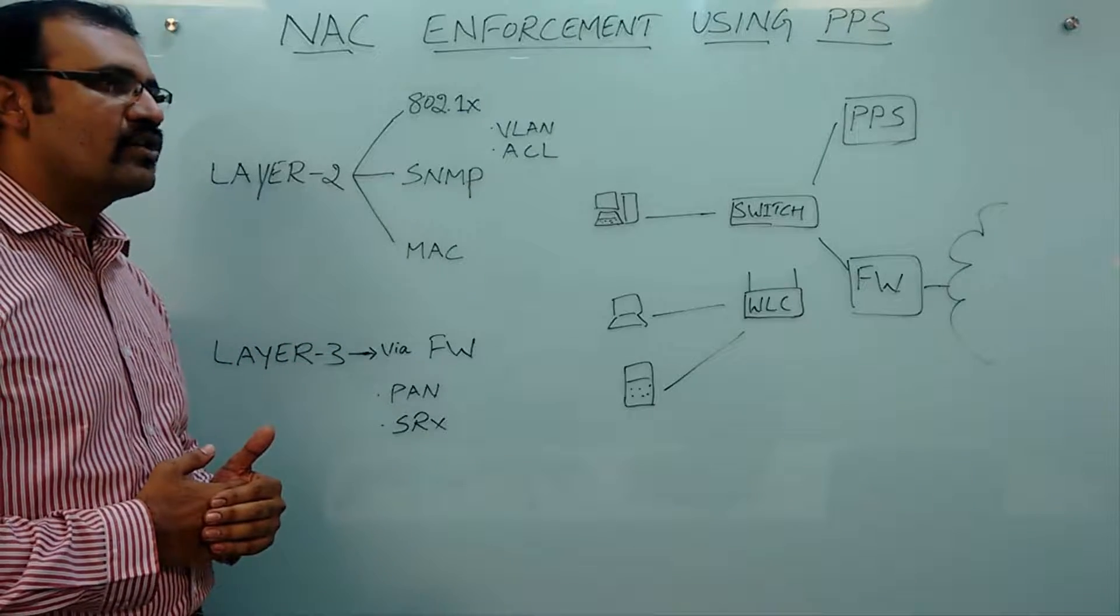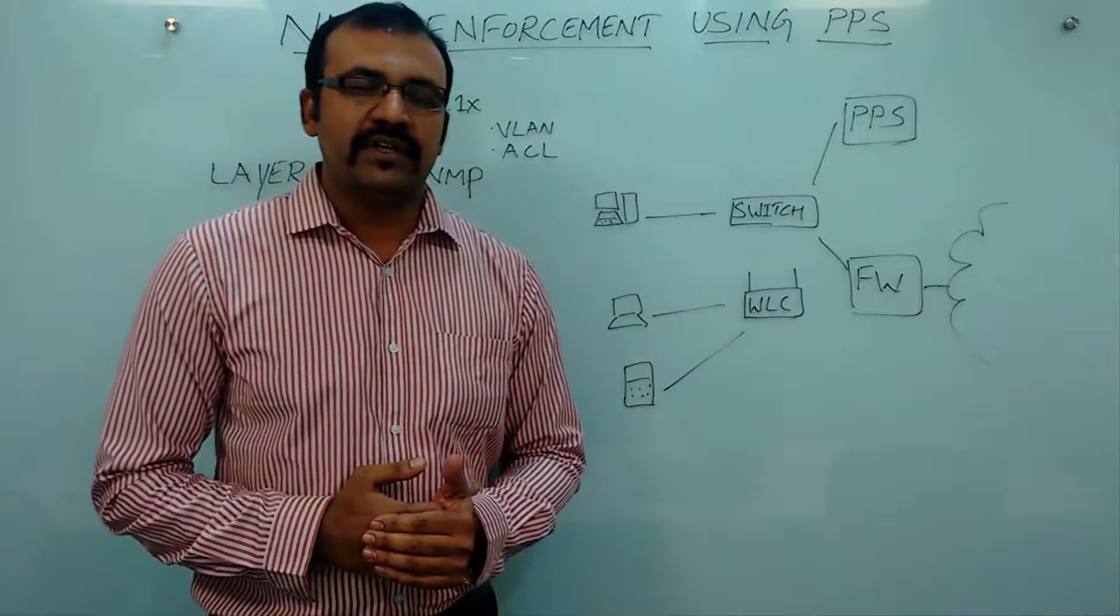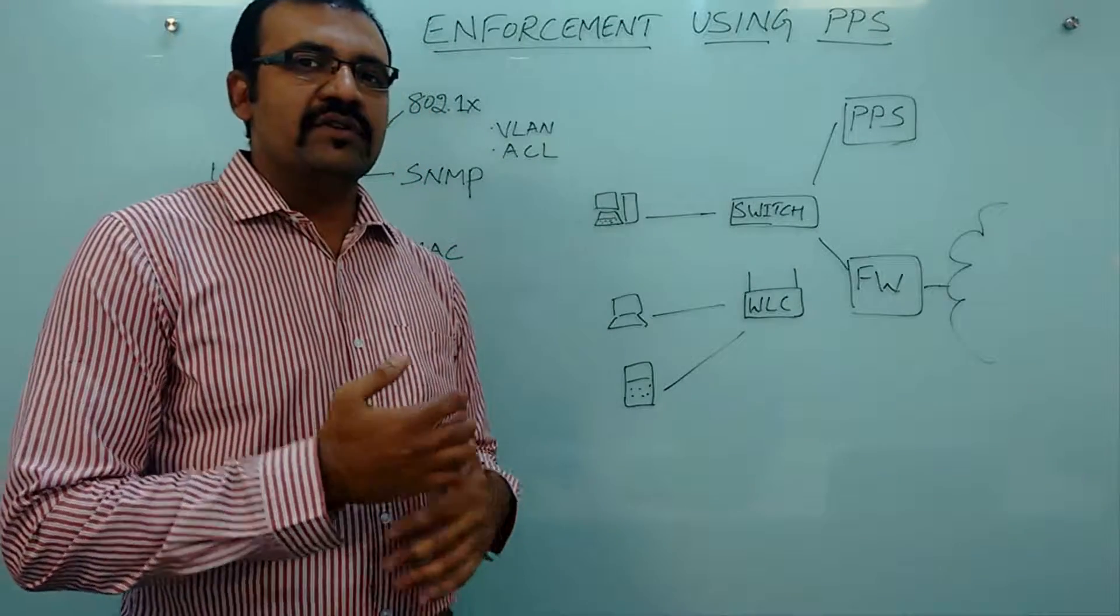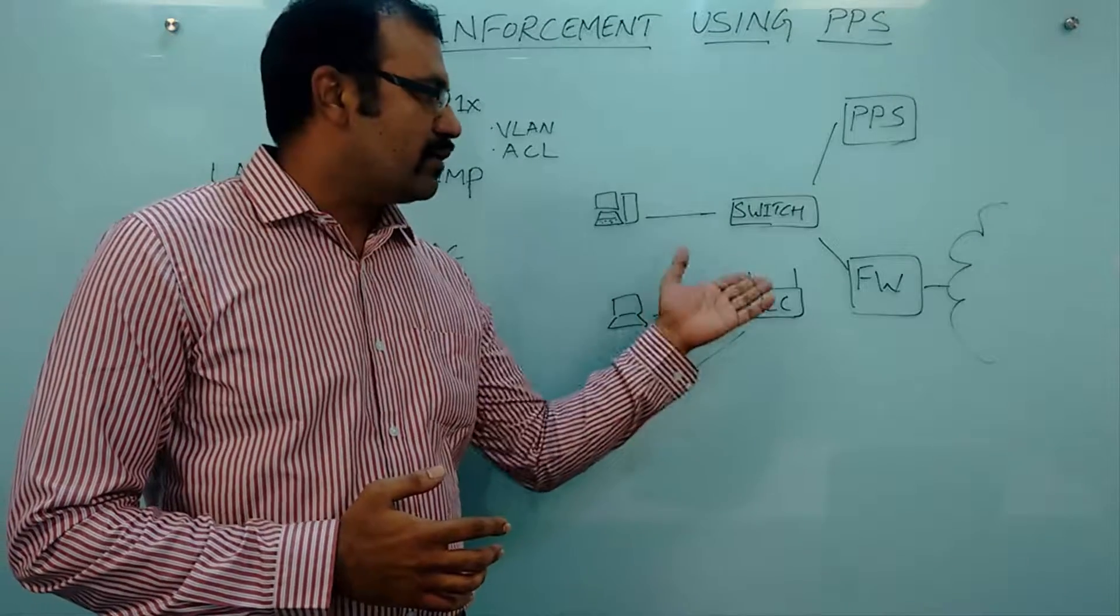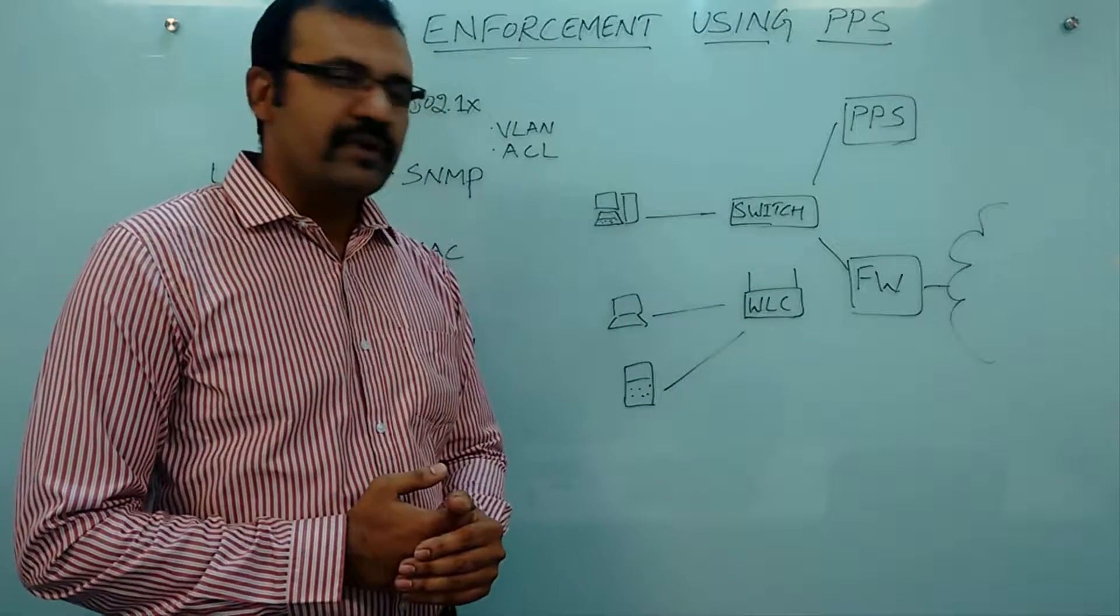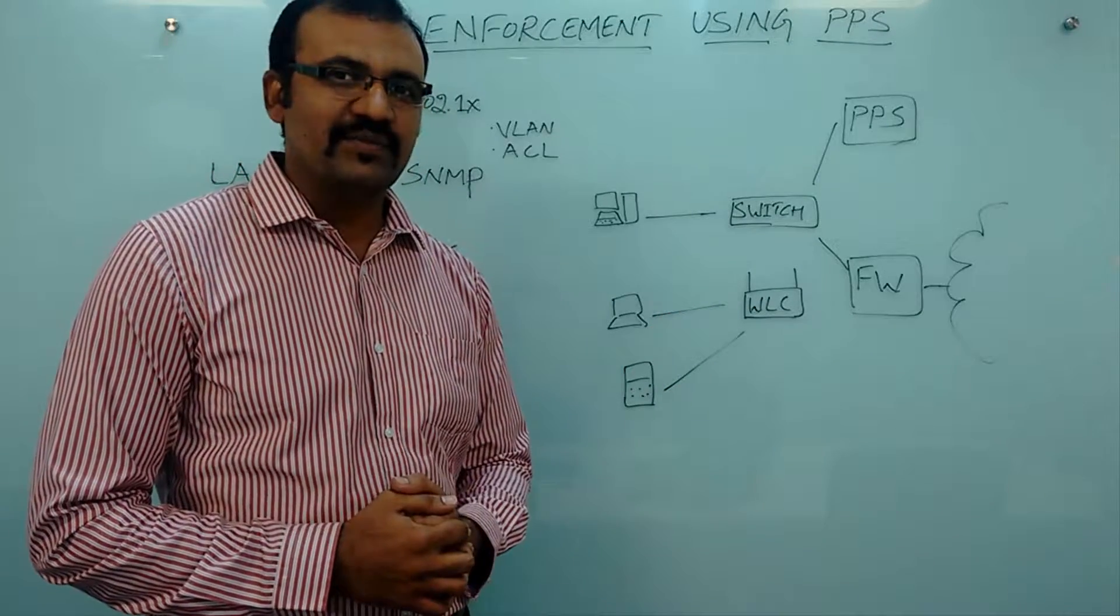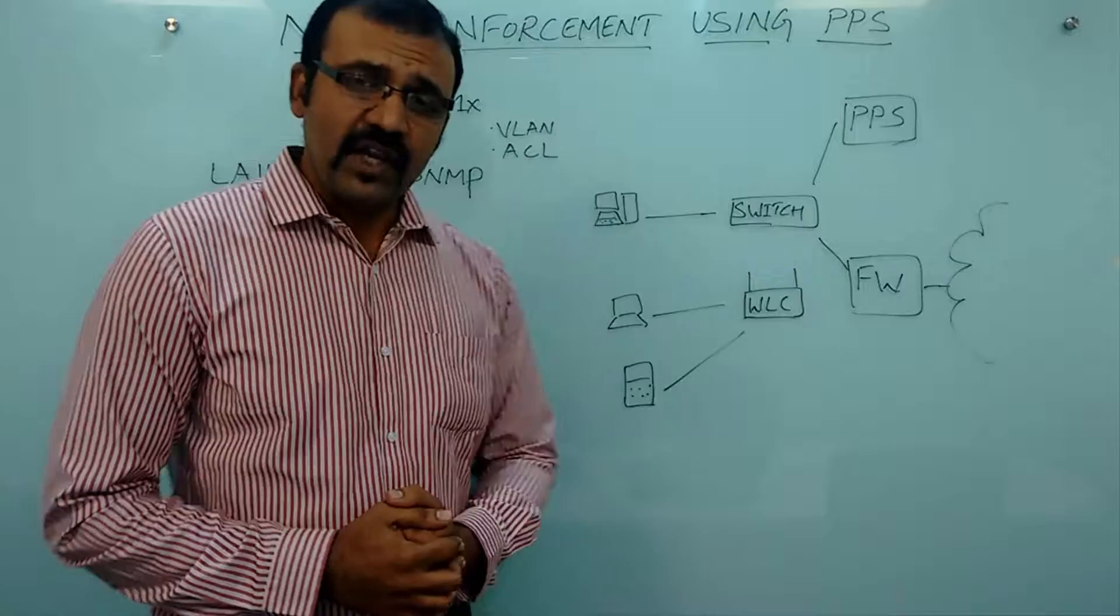Layer 2 means the control will be applied on endpoint devices where users attach to the network. In case of wired network, it will be at the switch port level. In case of wireless, it will be at the WLC access point.